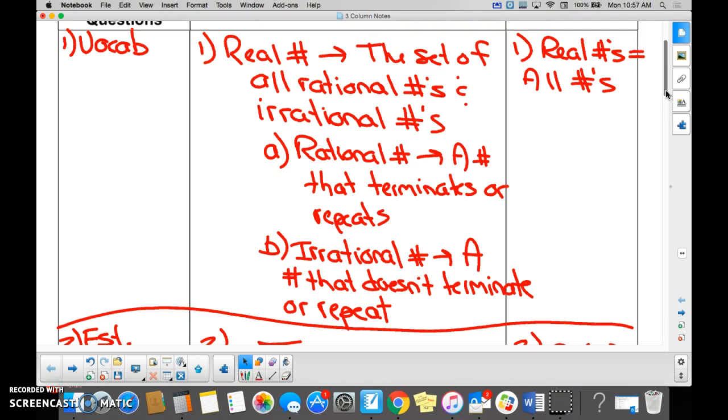A rational number terminates or repeats and the irrational number doesn't terminate or repeat. Give me an example of an irrational number. Sixth and seventh-tenths and then it's three dots. Okay, so something that never ends or repeats.